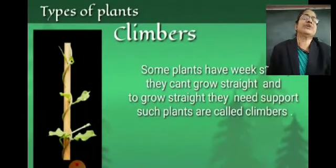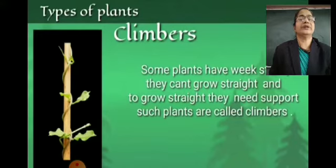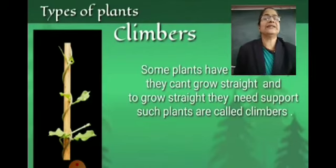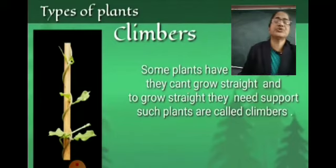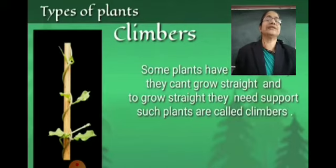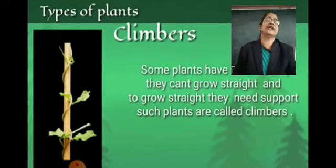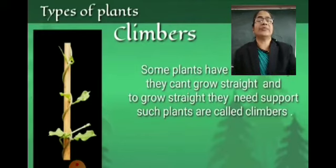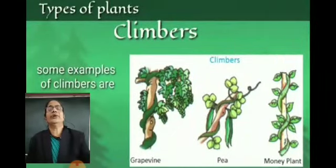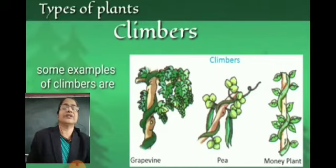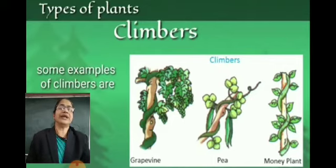Next type of plant is climbers. Some plants have a weak stem and cannot grow straight. To grow straight, they need support. Such plants are called climbers. Examples of climbers are grapevine, pea, and money plant.